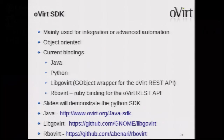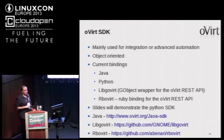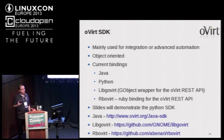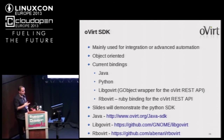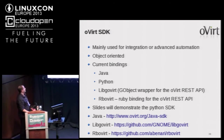The SDK is mainly used for integration or advanced automation. It's object-oriented, and we currently have two bindings: Java and Python. The CLI is based on the Python one, which was the first binding we had. There are also a few other community projects: libgovirt (a g-object wrapper) and rbovert (a Ruby binding), though rbovert is not a complete binding for the API.